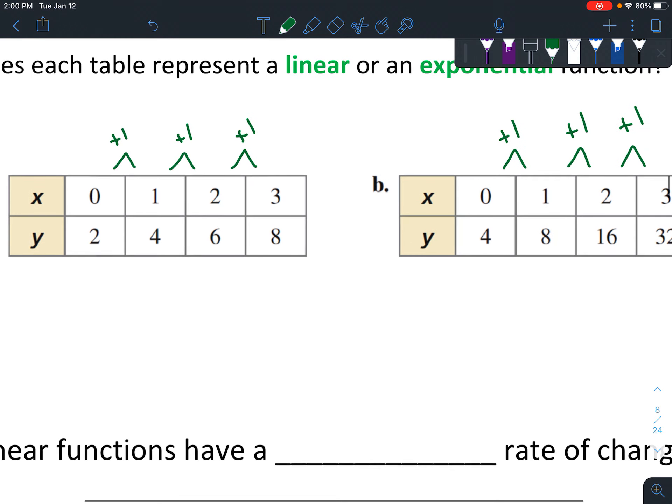And now let's look at the outputs. Your first output is 2, and then it goes to 4, which is an increase of 2. So we've got plus 2. And then from 4 to 6, we add 2 again. From 6 to 8, we add 2.